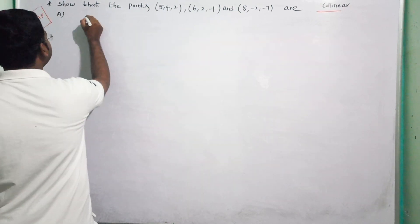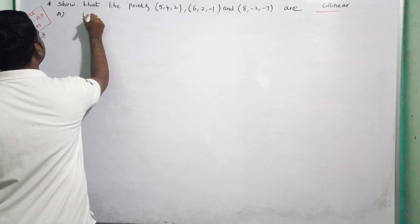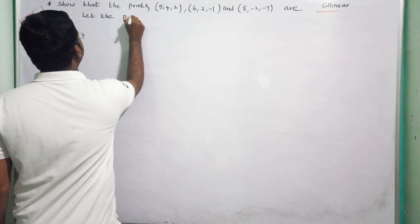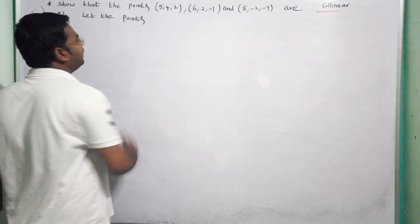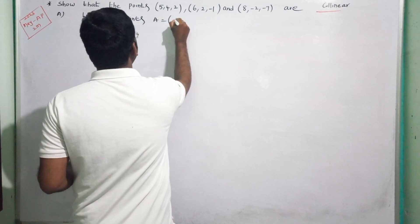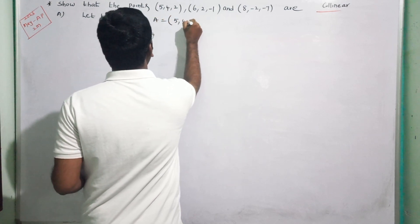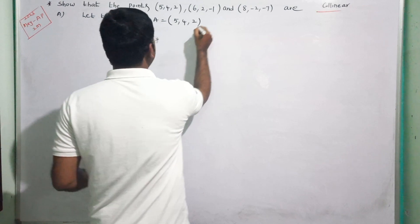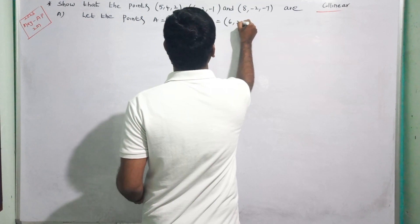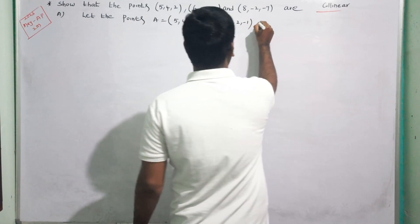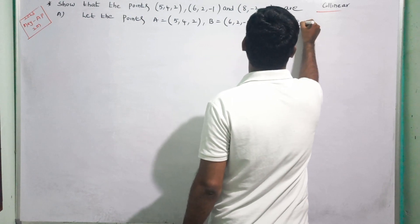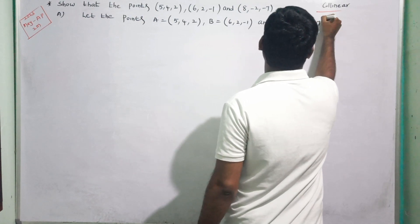Now step by step. Let the given points be A equal to (5, 4, 2), B equal to (6, 2, -1), and C equal to (8, -2, -7).